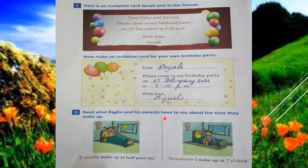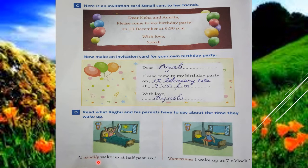The next question, question D, is: read what Raghur and his parents have to say about the time they wake up. In this question you learn how to say or write something about your daily routine. Here in this picture, this is Raghur. He said: 'I usually wake up at half past six.' 'Usually' means mostly — mostly I wake up at half past six, commonly at 6:30.